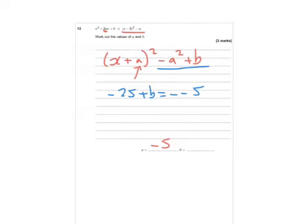Okay, so I've got minus 25, minus 25 plus b equals 5, so b equals 30.